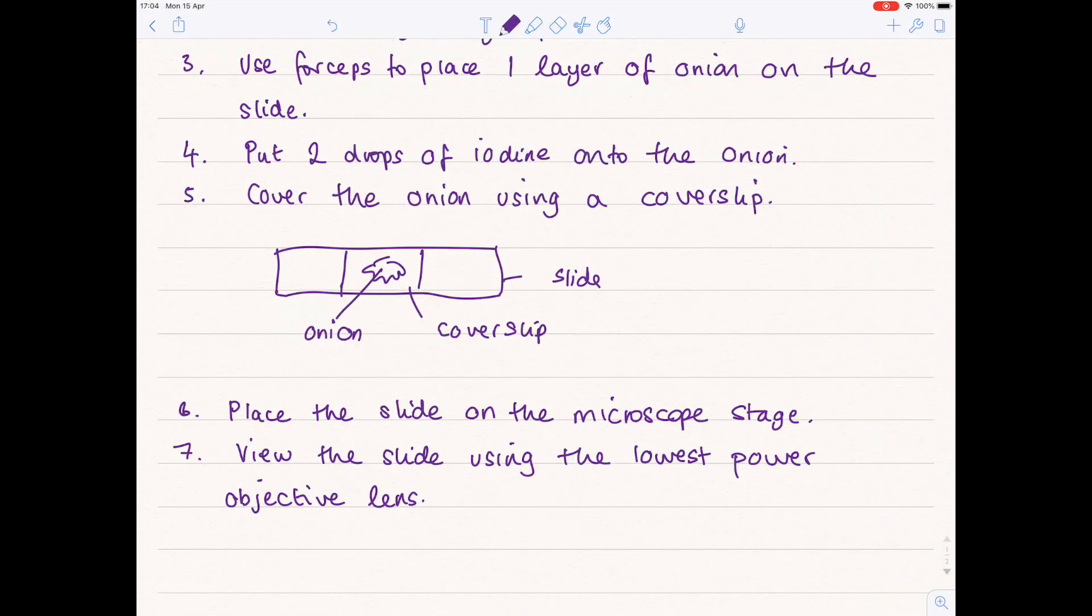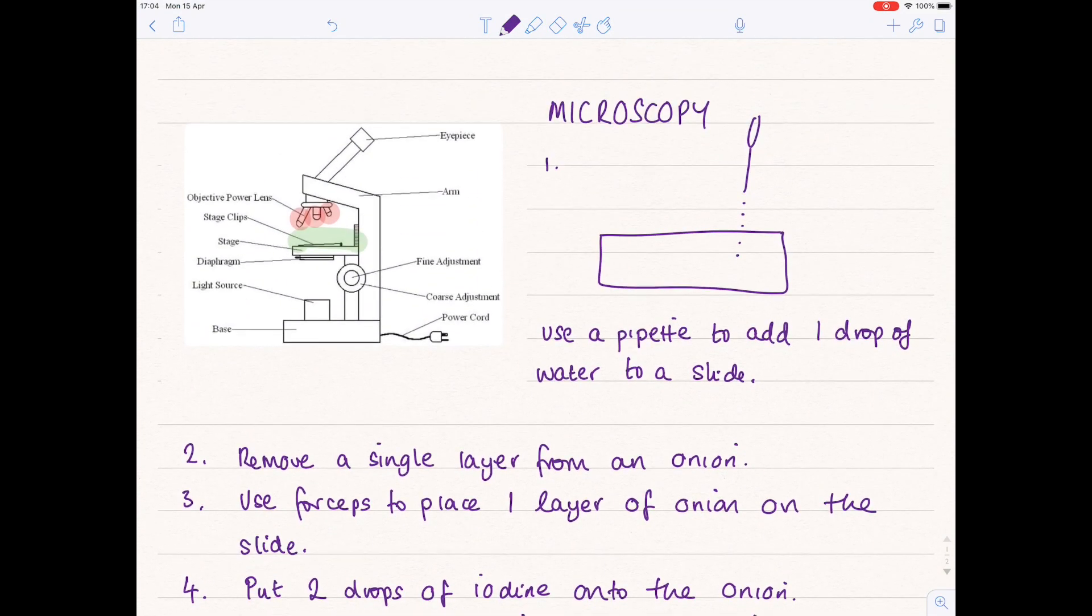Look through the eyepiece, which is up here, and you want to turn this fine adjustment knob here in order to bring that slide into focus. Once you've done that, you can rotate and zoom in effectively. You can magnify that slide using a higher power objective lens.